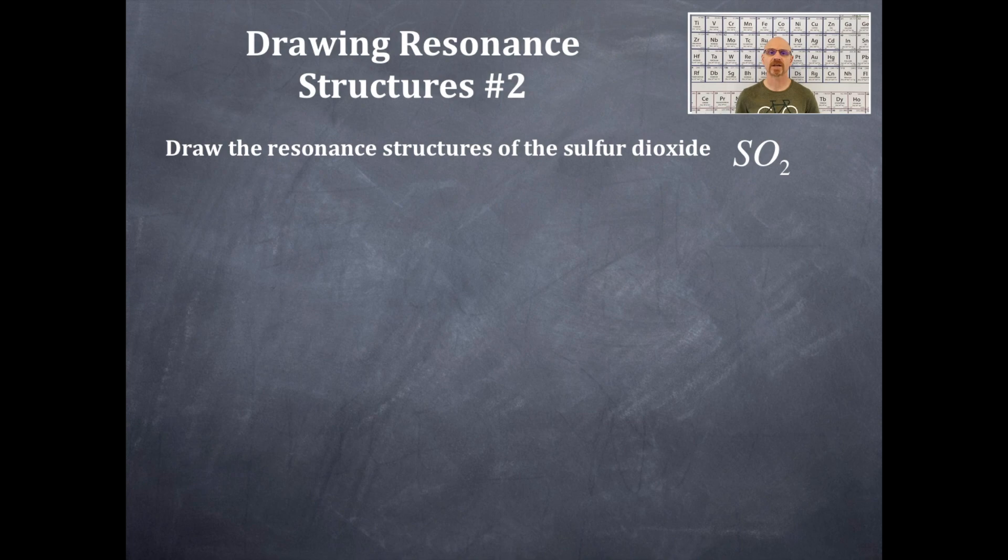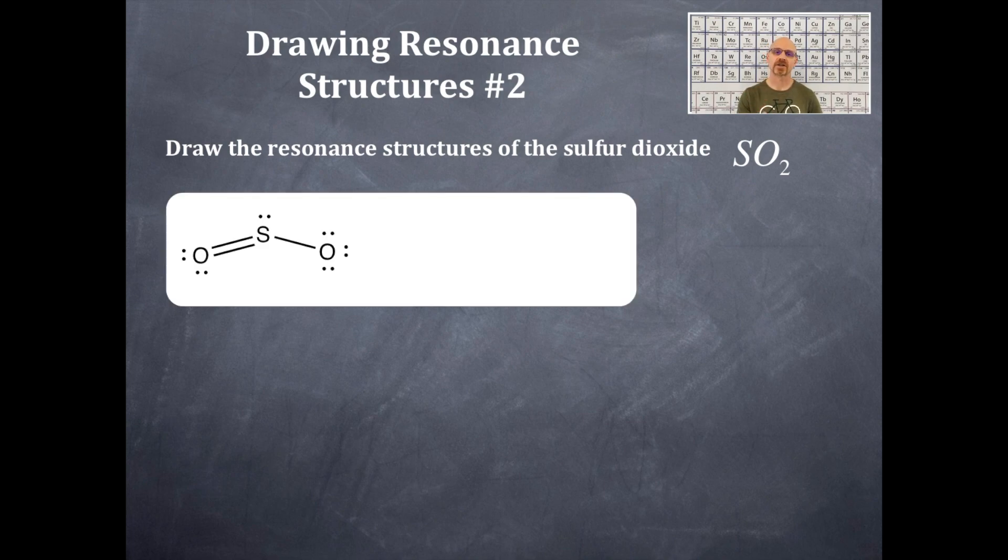Then you have to verify the octet rule. Now the sulfur still does not have an octet. So you're going to have to use one of the lone pairs of electrons on the oxygen to get a double bond on that central sulfur. So hopefully that makes sense for you. And then you should get a Lewis dot structure, something like that right there. At least one of them. There's the Lewis dot structure.